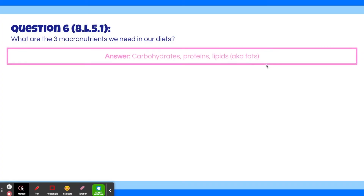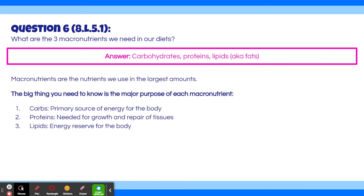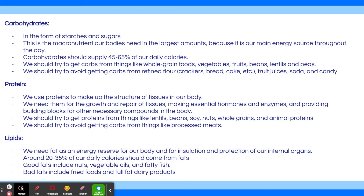The answer is carbohydrates, proteins, and lipids, also known as fats. Macronutrients are the nutrients we use in the largest amounts. The big thing you need to know is the major purpose of each macronutrient: carbs are the primary source of energy for the body, proteins are needed for growth and repair of tissues, and lipids are the energy reserve of the body. You can pause the video here and read this slide, or check out our full slideshow linked in the description box below.